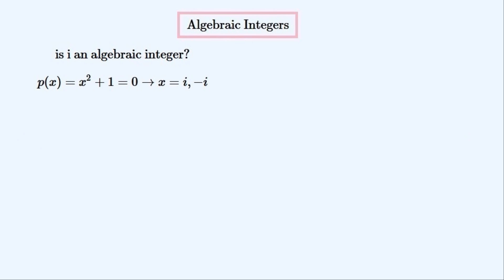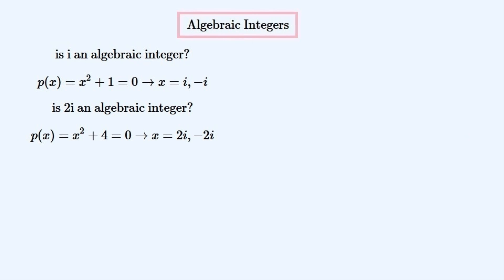Let's look at the imaginary number i. Is i an algebraic integer? Yes it is, because it is the solution to the polynomial x squared plus 1. Its opposite, minus i, is also a root of this polynomial, so it is an algebraic integer too. And 2i should also be an algebraic integer, because we could find a monic polynomial for it in a similar way: x squared plus 4 is the monic polynomial that it is a root of.